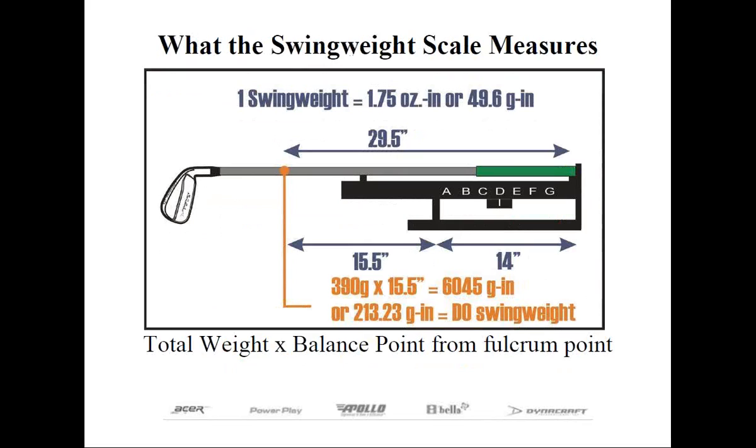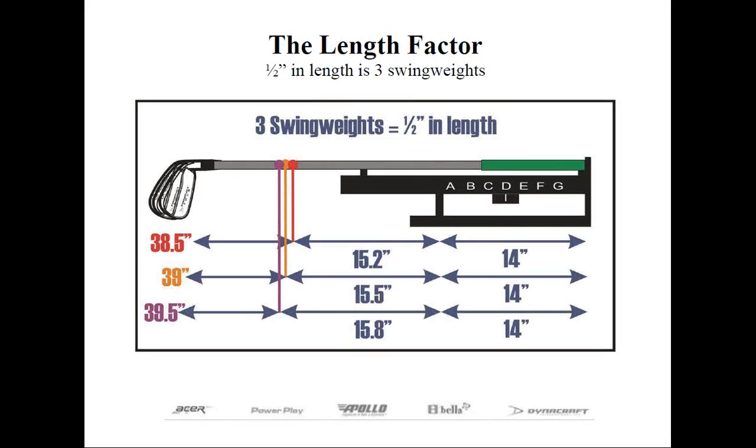Under our next component, which is length, let's show you how the swing weight factors into that. Using our same example as before, we're just going to shorten the club by half an inch. And if we take the length off the butt end or tip end, that's only going to have a measurable effect on the flex. But for swing weight, it will reduce the swing weight by three points.